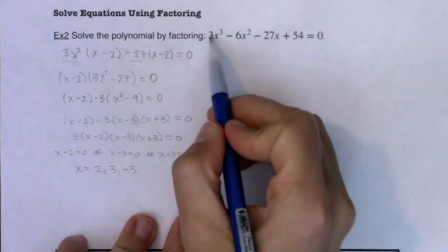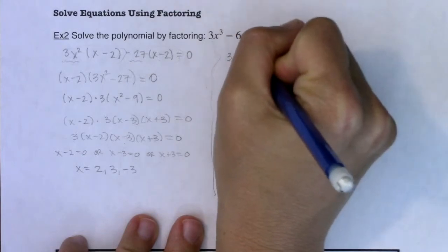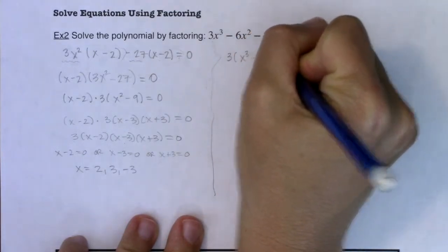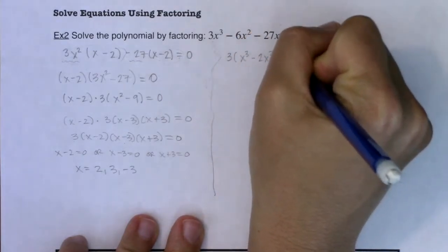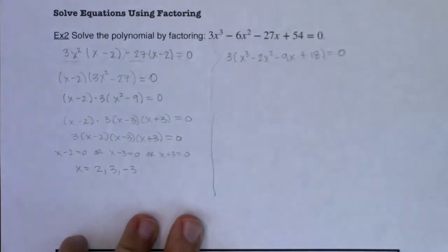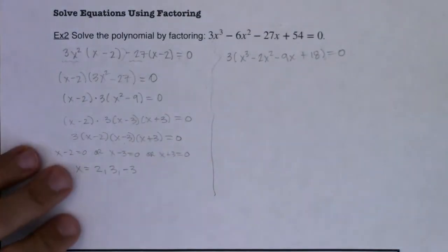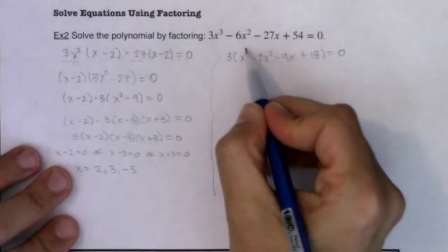So instead of just going right to grouping I'm going to see if there's a greatest common factor and I see that each of these have a three in common. So I'm going to factor out the three and get x cubed minus 2x squared minus 9x plus 18 is equal to zero. All right so this is just a different way of doing it. I wanted to factor the three out from the beginning and now I'm going to group.